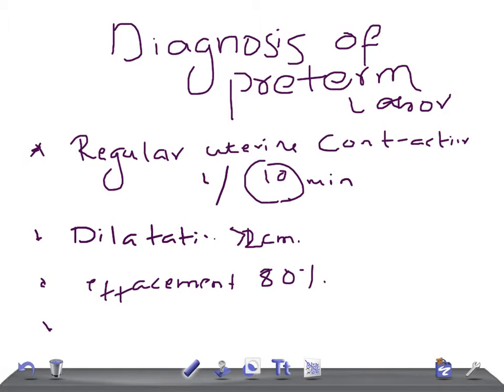The length of the cervix, measured by transvaginal sonography, should be less than 2.5 centimeters, with funneling of the internal os.